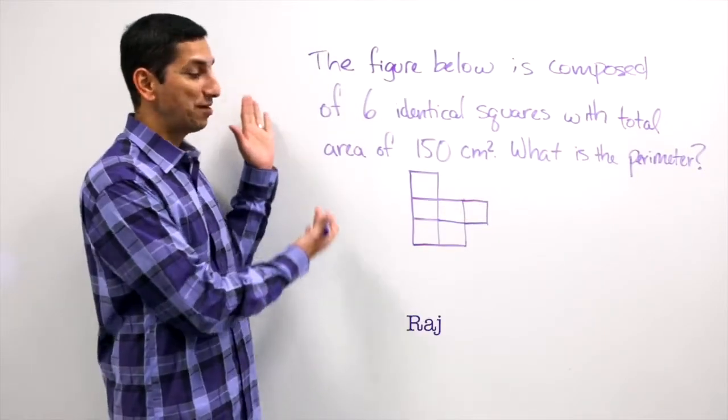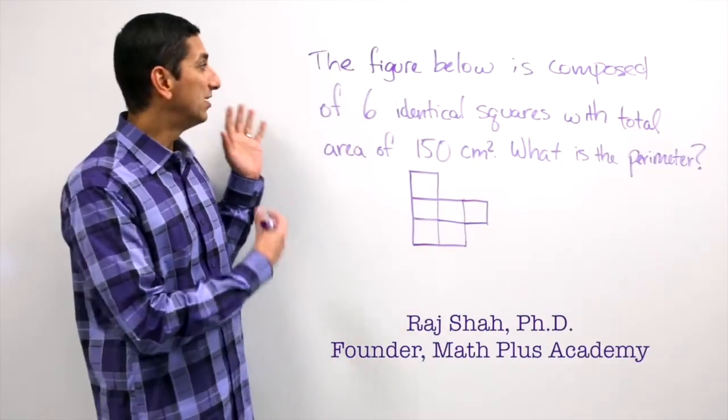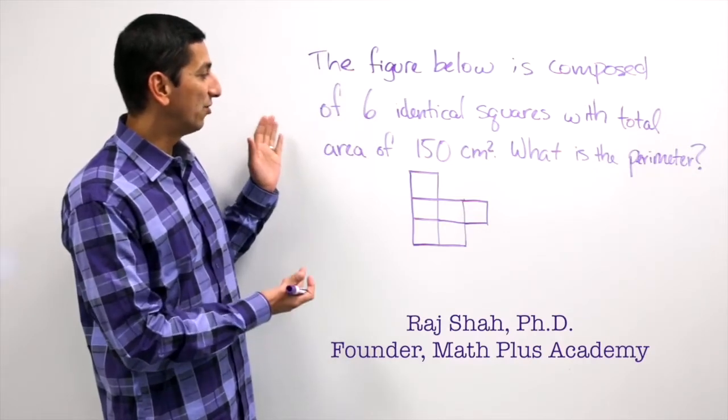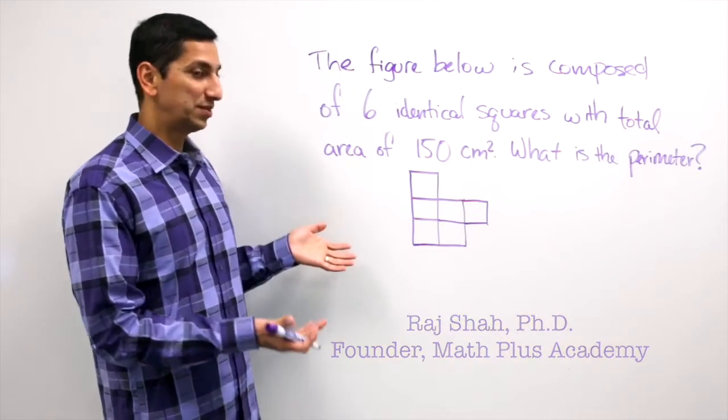Okay, let's suppose your child has a problem like this that they're struggling with. The figure below is composed of six identical squares with total area 150 square centimeters. What is the perimeter?